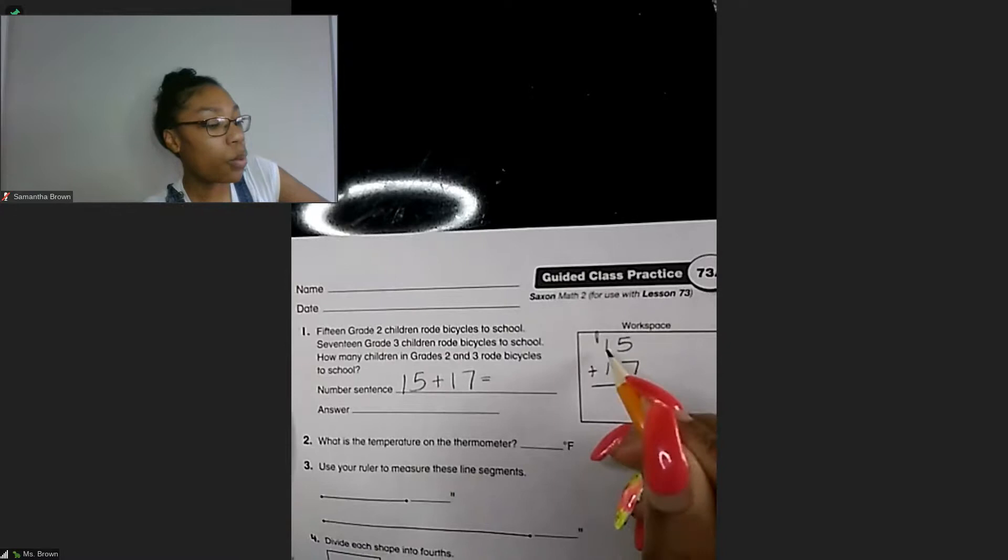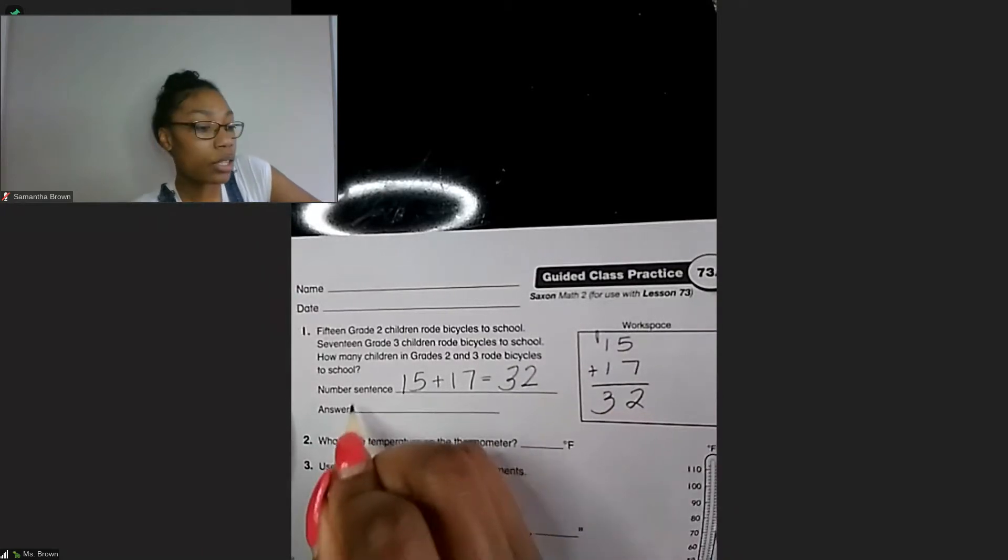So 15, line them up, 17. So we have 5 plus 7 equals 12, I know that. So in our ones column we are going to place 2 there and bring our 1 over to the tens column. So we have 1 plus 1 equals 2 plus 1 more equals 3. So our answer is 32. And then our answer with a label is 32 students.